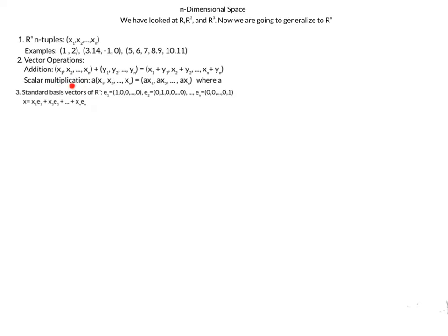We also have a standard basis. In two dimensions, E1 equals (1, 0) and E2 equals (0, 1). These standard basis vectors point in the directions of our axes. In three dimensions, we also had E3, which pointed up in the z direction. They were all unit length, length of 1. So E sub i has a 1 in the i-th position and 0s everywhere else — this is our standard basis for Rn.